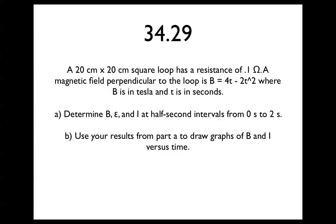A 20 cm by 20 cm square loop has a resistance of 0.1 ohms. A magnetic field perpendicular to the loop is B equals 4t minus 2t squared, where B is in tesla and t is in seconds.